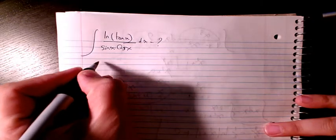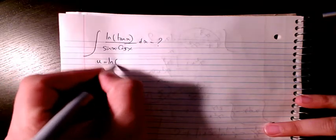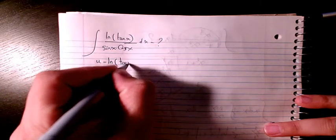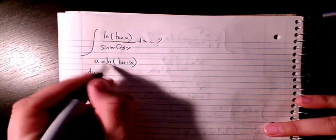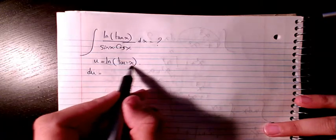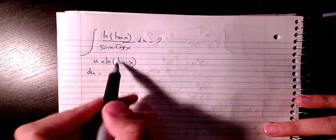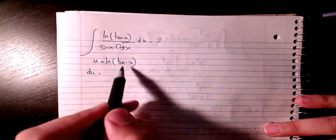I consider u as ln(tan(x)). So let's figure out what is going to be du. You know this is going to be the derivative of ln, which is going to be the derivative of this guy divided by the function.